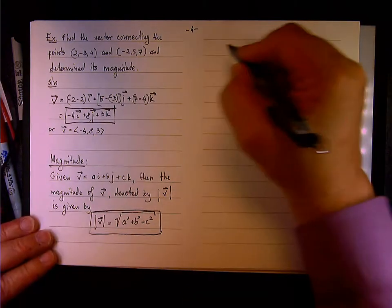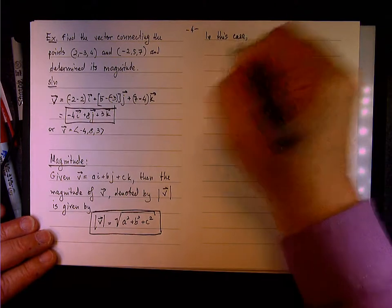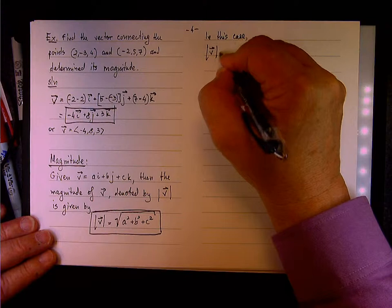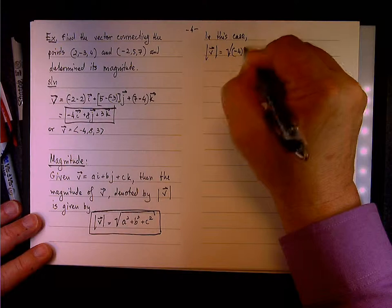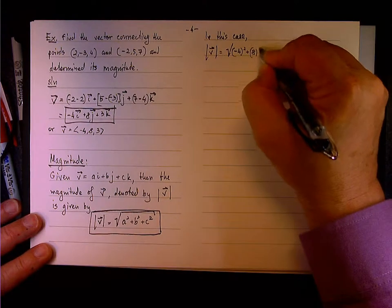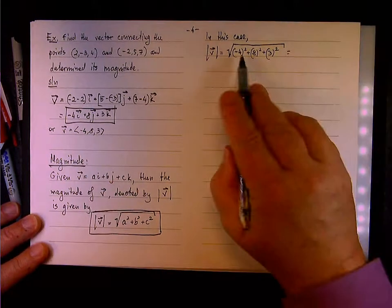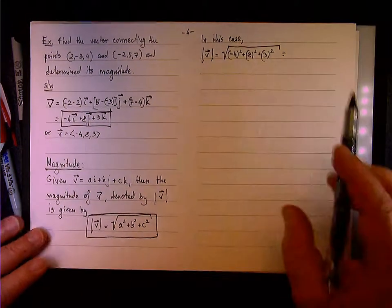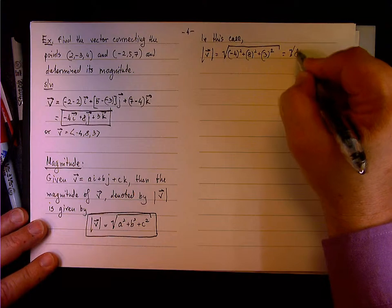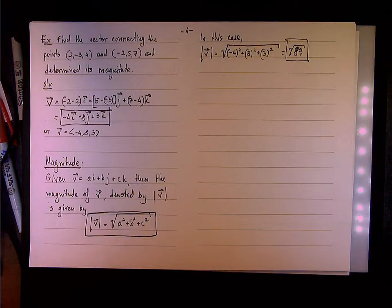So in our case, going back to the problem, in this case we have the magnitude of vector v will be the square root of (-4)² + 8² + 3². So we are looking at 16 and 64, right? So that's 80 and 3, 89. I think 89 is a prime number, so there is no way to simplify it. So this is the magnitude of the vector.